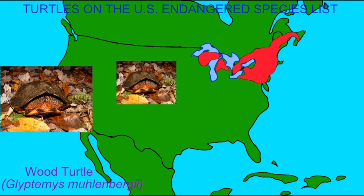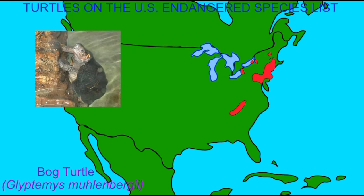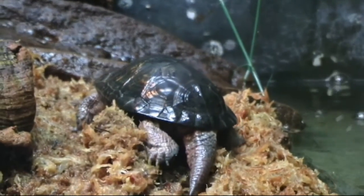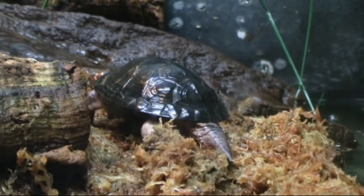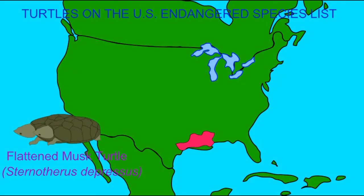Some turtles can occur over a broader geographic range but are rare throughout this range, such as the wood turtle and bog turtles. Habitat loss, whether in forests or wetlands, especially as new invasive species are introduced, can affect these species.